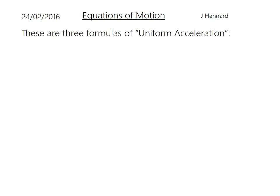There are three formulas of uniform acceleration, and unfortunately you do need to learn these for both mechanics and for the OCR FSMQ. Here they come: V equals U plus AT, S equals UT plus half AT squared, and V squared equals U squared plus 2AS. With these three you can get anything you want.